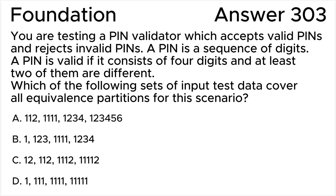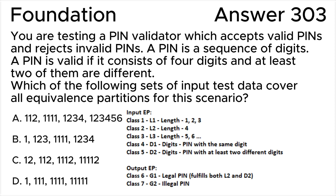The most important thing is to determine the equivalence partitions correctly. There are five equivalence partitions for input data: L1 — length is 1, 2, or 3; L2 — length is 4; L3 — length is 5, 6, or more; D1 — digits where all are the same; D2 — digits with at least two different digits. There are two equivalence partitions for output data: G1 — a legal PIN (fulfills both L2 and D2); G2 — an illegal PIN.